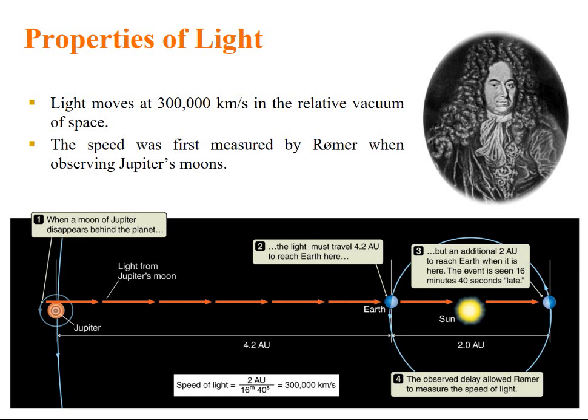Properties of Light: Light moves at 3 times 10 to the 8 meters per second in the vacuum. The speed was first measured by Romer when observing Jupiter's moon. See the figure. When a moon of Jupiter disappears behind the planet, the light must travel 4.2 AU to reach earth here. But an additional 2 AU to reach when it is here, that is at the third point, the event is seen 16 minutes and 40 seconds late. The observed delay allowed Romer to measure the speed of light. The speed of light is calculated as 2 AU divided by 16 minutes and 40 seconds, that is equal to 3 times 10 to the 8 meters per second.